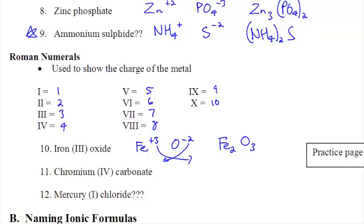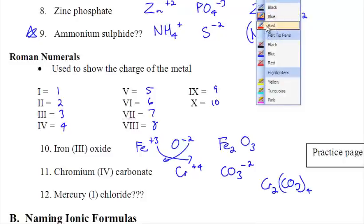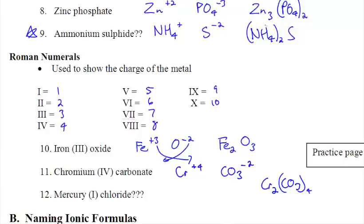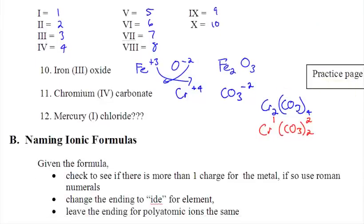Chromium four carbonate is telling you that chromium has a plus four charge. Carbonate is on the back of your periodic table, CO3 minus two. When you put those things together, you get Cr2(CO3)4. Here's a great time to remind you that if you have numbers that you can reduce, you should. So that's going to be a one, and that's going to be a two. So your final answer is going to be Cr(CO3)2.